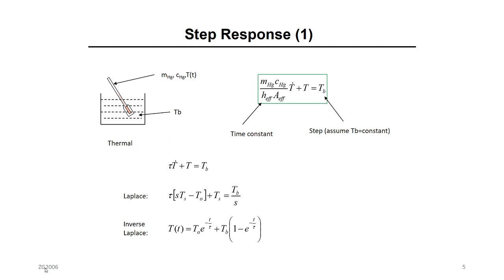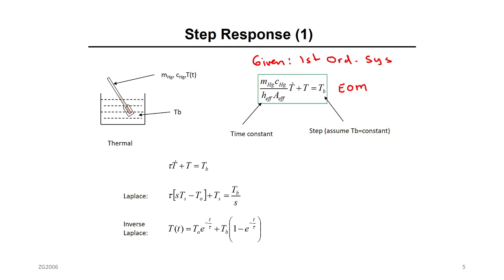We have a first-order system — a thermal system. We did not talk about thermal systems in chapter 7, but it doesn't matter because the model is already given. This is the equation of motion. So given the equation of motion, this is a first-order system.